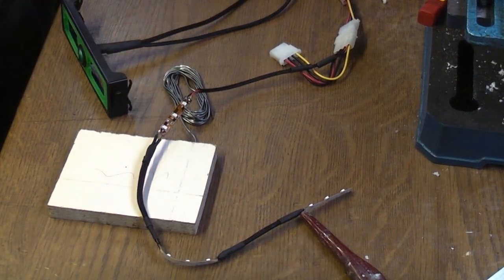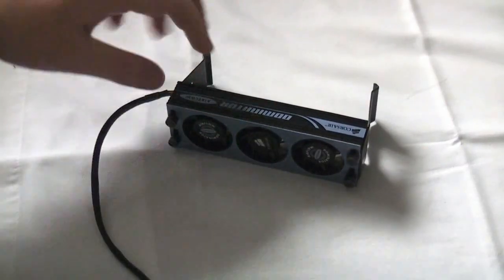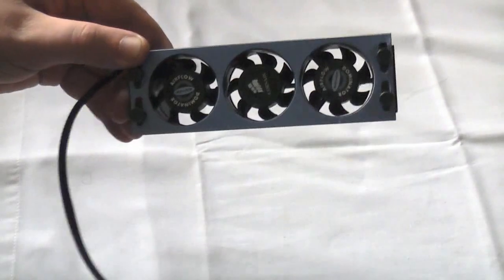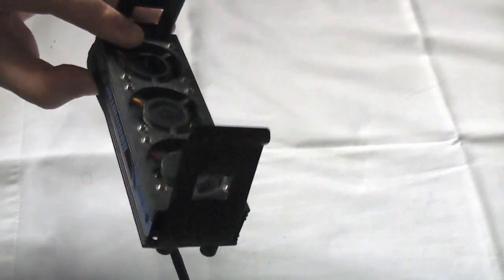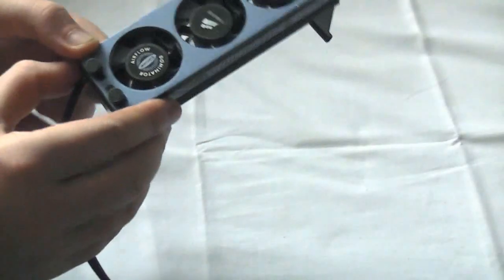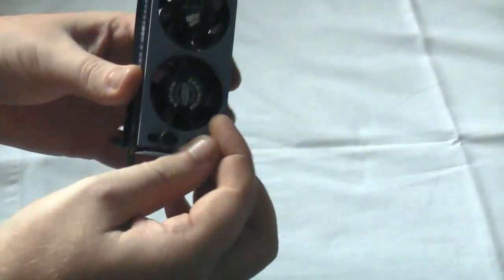we're on to our next piece of equipment which is a Corsair Dominator Ram cooler which I've had for donkey's years. Blue and black. Note the blue there. Well, we'll be changing that.